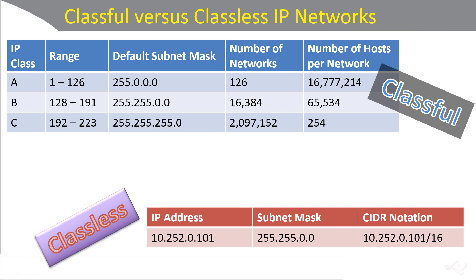Here's an example of something that's classless. We have an IP address 10.252.0.101 and a subnet mask of 255.255.0.0. In the classful days, you would say the 10 network is within the class A range. But with classless, we can just change the subnet mask to whatever we want. You look at the subnet mask to tell you what the network portion is and what the host portion is of the IP address. So 255.255 means the first two octets — the network here is 10.252.